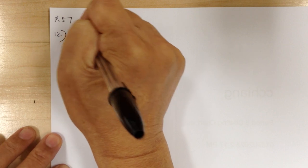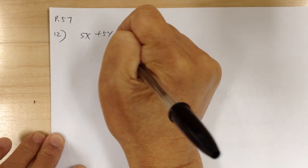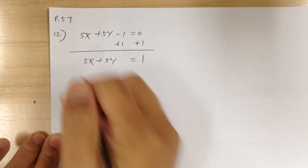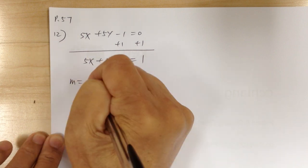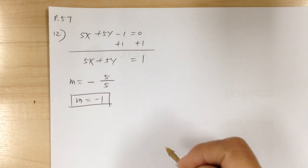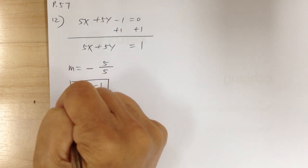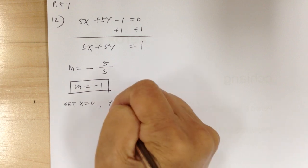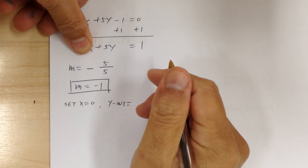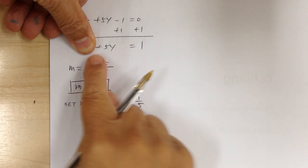Number 12: you have 5x plus 5y minus 1 equals 0. First move the constant over to put it in standard form to reduce mistakes. Find the slope using slope equals negative a over b, so slope equals negative 1. Then find intercepts — set x equal to 0, so divide both sides by 5: y-intercept equals 1 over 5.